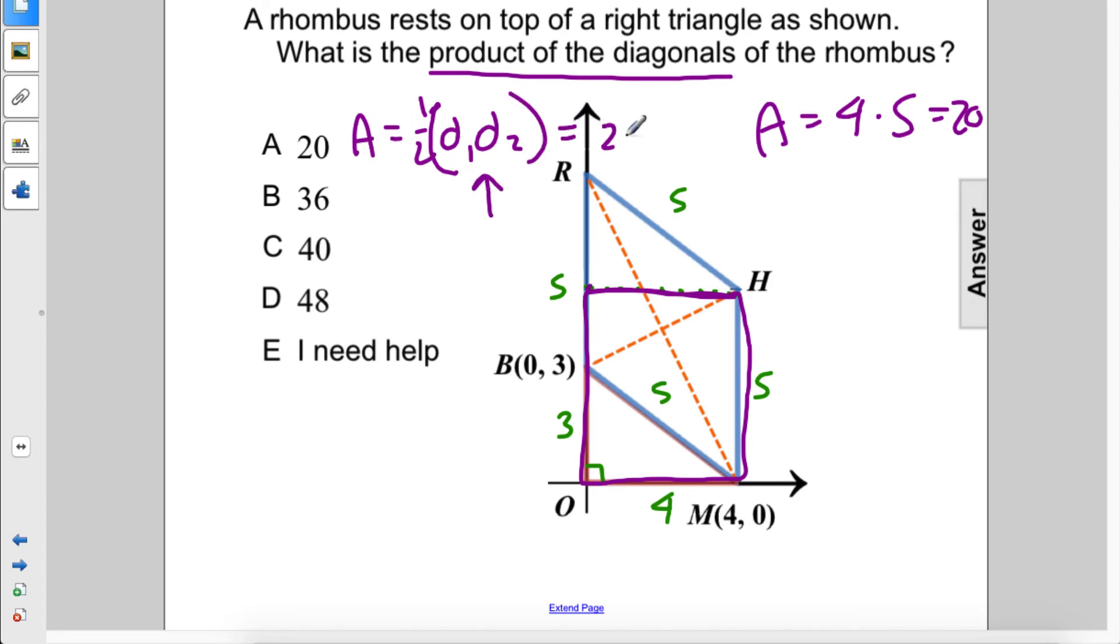We know the area equals 20, so if we divide both sides by one-half, we see that d1 times d2 equals 40. The answer is C.